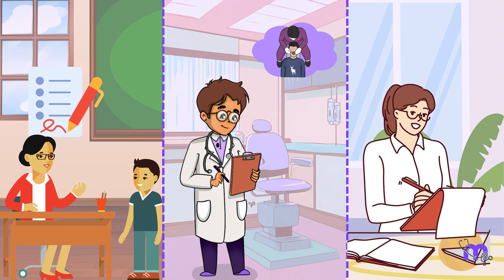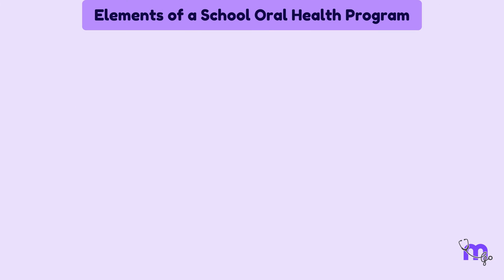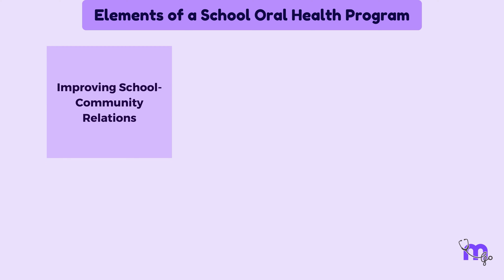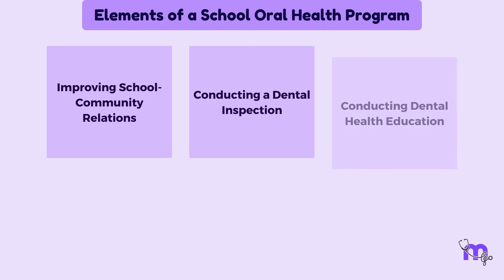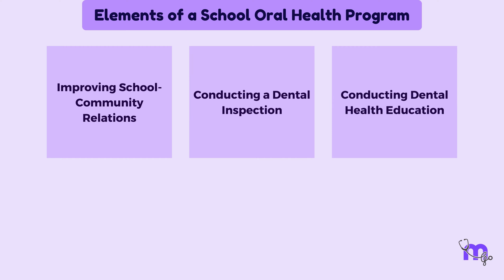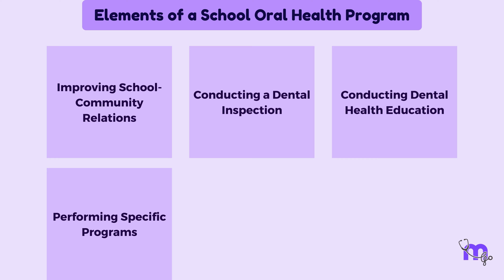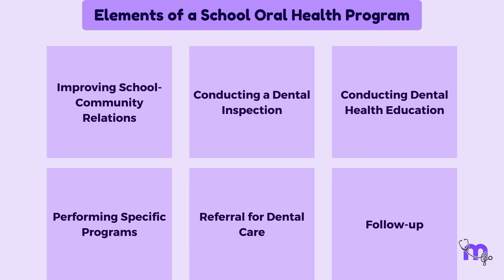To quickly recap, there are six elements of the school oral health program. First is improving the school-community relations, followed by conducting dental inspections and dental health education. The fourth component is performing specific programs, like tooth brushing programs or fluoride water mouth rinse. The fifth element is referral for dental care, followed by a follow-up of the treatment and care provided. When writing elements for your exams, remember to first always mention the elements, and after that only go into explaining each in detail.